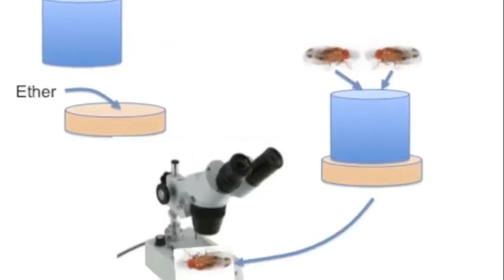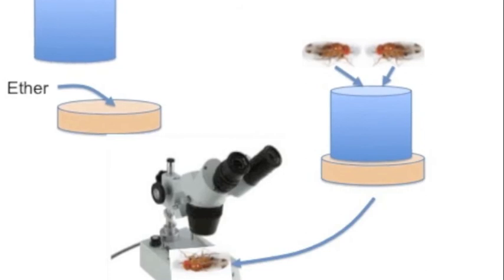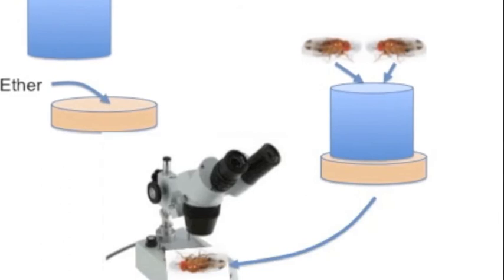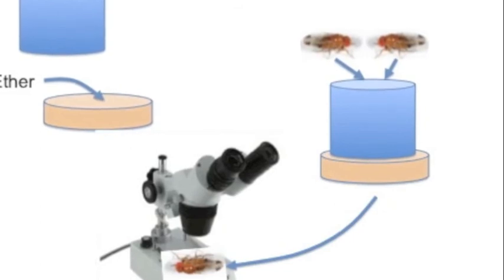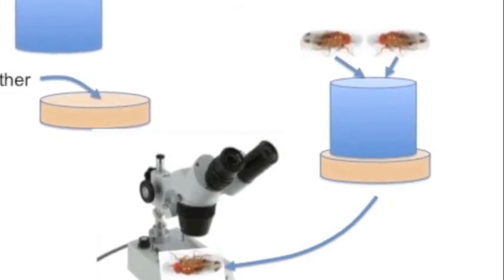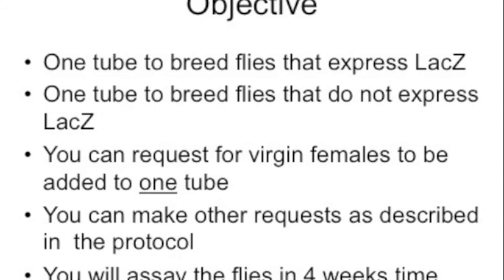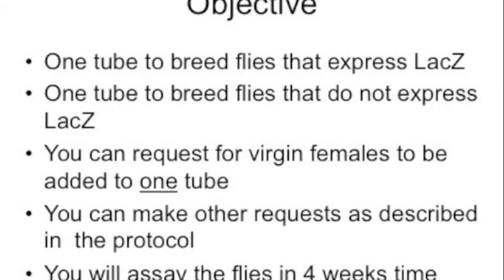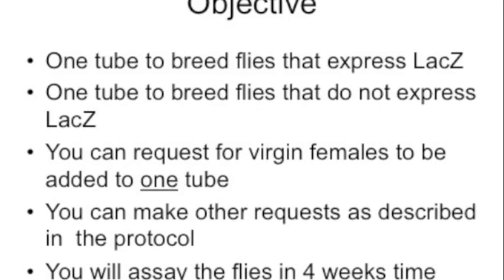In order to mate the flies, you will have to set up the chamber with some ether and then bring the flies dropping from the bottle directly into your anesthetizing chamber. The flies will fall asleep and you will be able to look under the dissecting microscope to separate the males from the females. The objective of your experiment is to prepare flies that will express LacZ. So from one tube you will want flies that express LacZ, and another tube will be your control, which does not express LacZ.